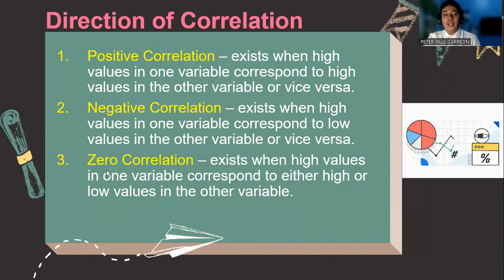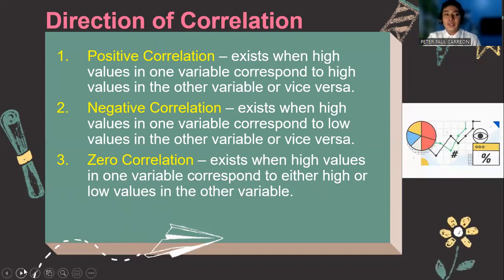Number three, zero correlation. It means when the high values in one variable corresponds to either high or low values in the other variable. Meaning there is no relevance or there's no relationship existing. For example, the salary and the color of your hair are zero correlated. Your salary in a job does not reciprocate the color of your hair. They are not actually related with each other. That is why it is a zero correlation.